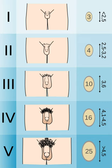Tanner Scale from Wikipedia, the free encyclopedia at en.wikipedia.org. The Tanner Scale, also known as the Tanner Stages, is a scale of physical development in children, adolescents, and adults.